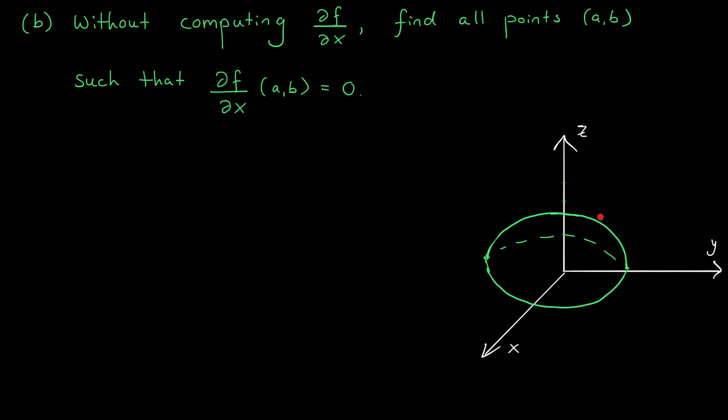Here's the graph of f(x,y). It's the upper cap of a sphere. We also have a graphical interpretation of the partial derivative. At a point ab in the domain, the partial derivative with respect to x is the slope of the tangent line at ab in the x direction.